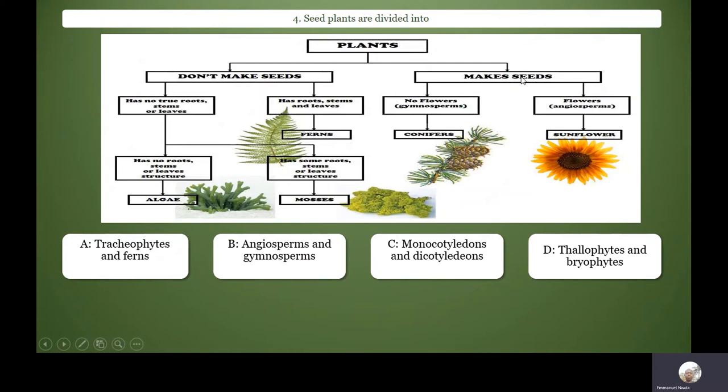The ones that produce seeds can be gymnosperms or angiosperms. Gymnosperms produce seeds but their seeds are not inside a fruit. So they produce what we call naked seeds. Like the conifers, they produce naked seeds. The angiosperms, their seeds are inside a fruit. The common flowering plants, their seeds are inside a fruit. So the answer to this question is B, option B.